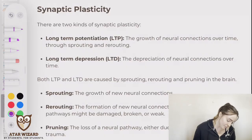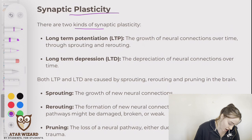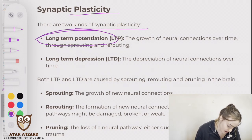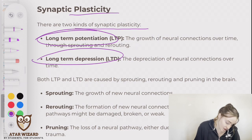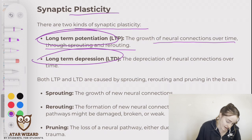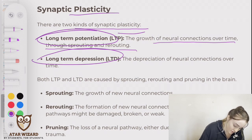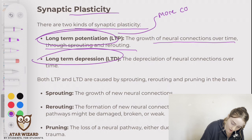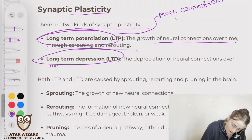So, synaptic plasticity. There are two kinds of synaptic plasticity: long-term potentiation and long-term depression. Long-term potentiation is the growth of neural connections over time through sprouting and rerouting. So through long-term potentiation, there are more connections growing over time.